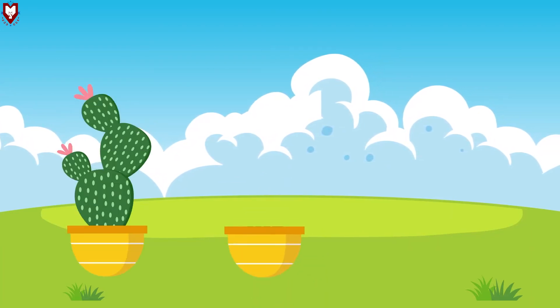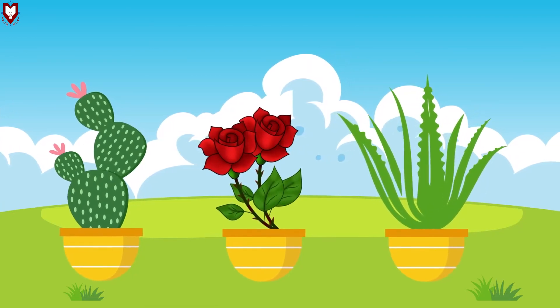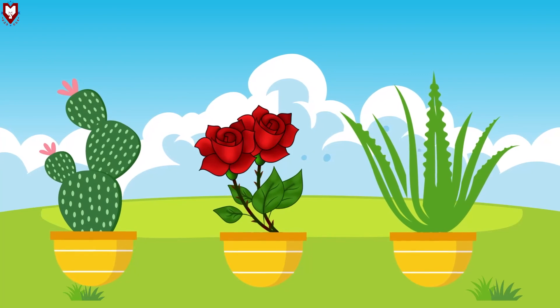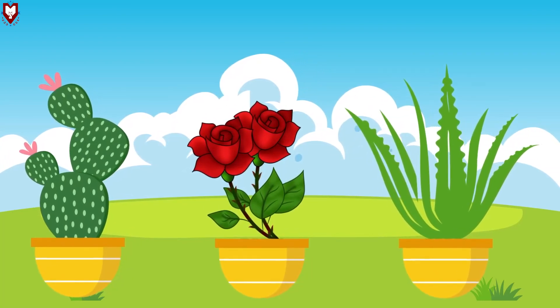Cactus, rose and aloe vera are some examples of thorny plants. Because they have thorns.